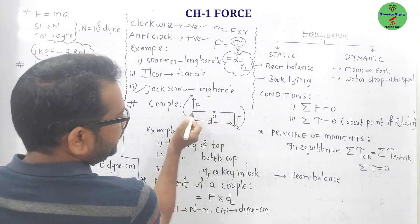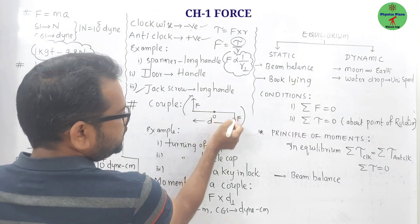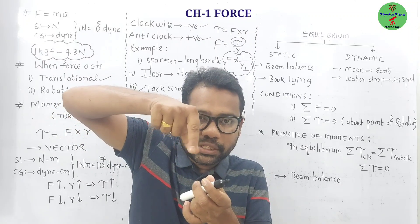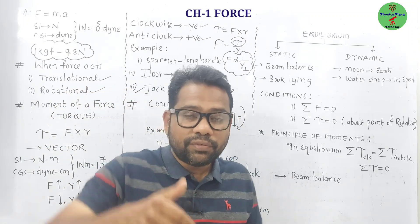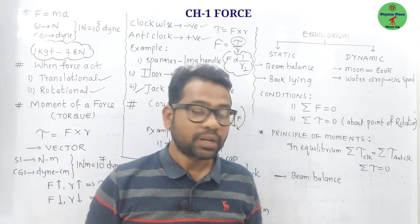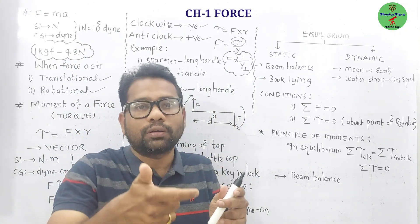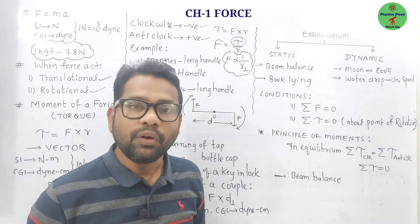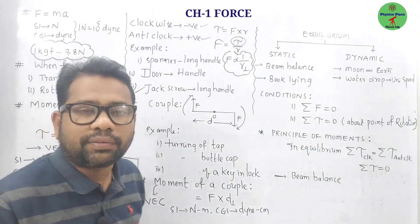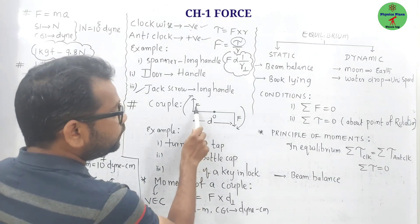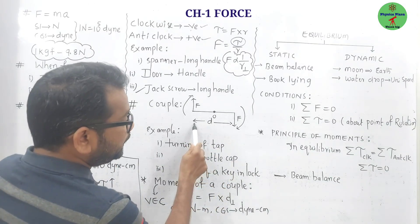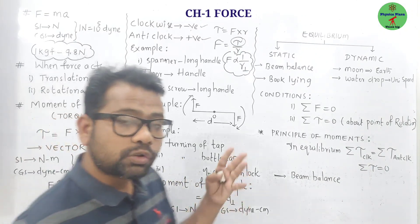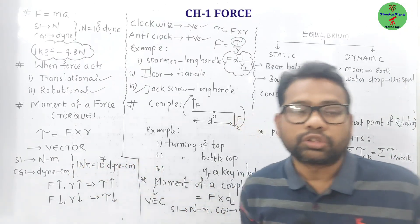Examples of couple: if you want to turn a tap, a couple is needed. If you want to open or close a bottle cap, and even turning a key in a lock — all these are examples of couple related to our day-to-day life. Next, moment of a couple: it is the product of either force and the perpendicular distance between the two forces, that is F into d. Moment of a couple is also a vector quantity, and its units are the same as torque units.